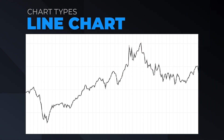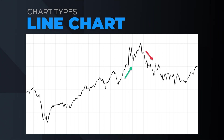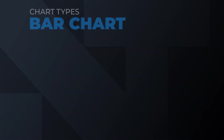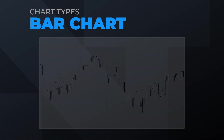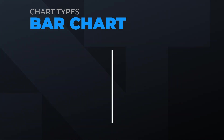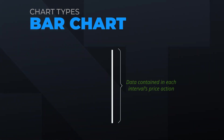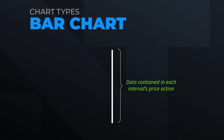The line chart can help determine direction from interval to interval — is the market increasing or decreasing as time passes? Bar charts are an improvement upon line charts. The bar refers to the data contained in each interval's price action.